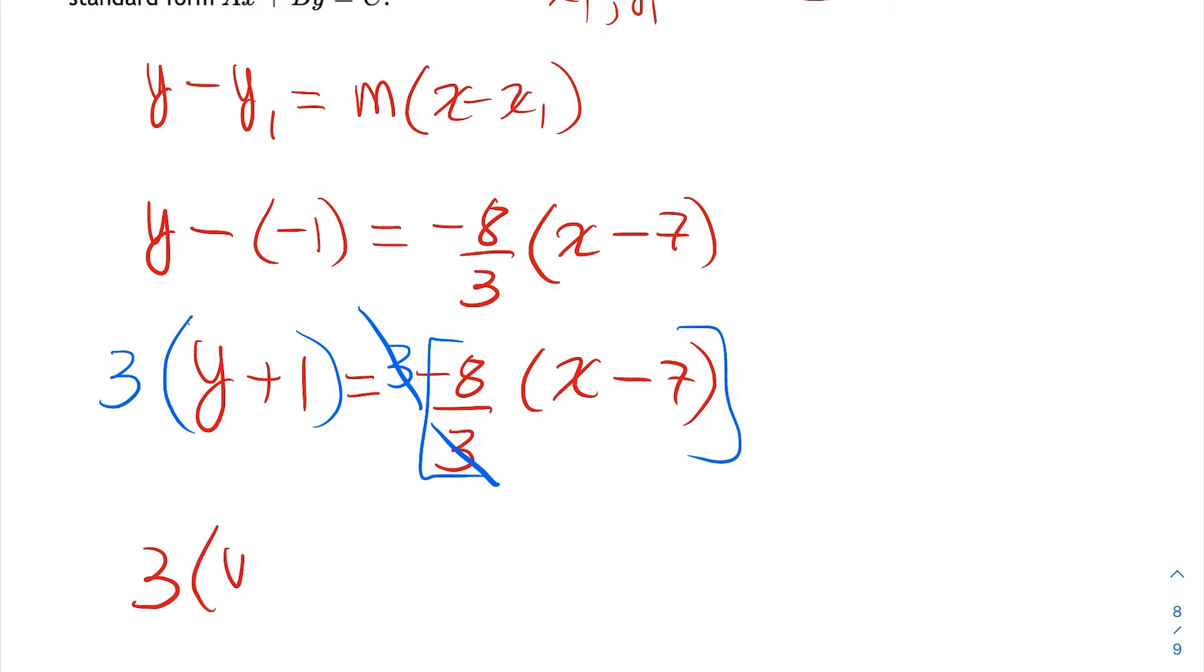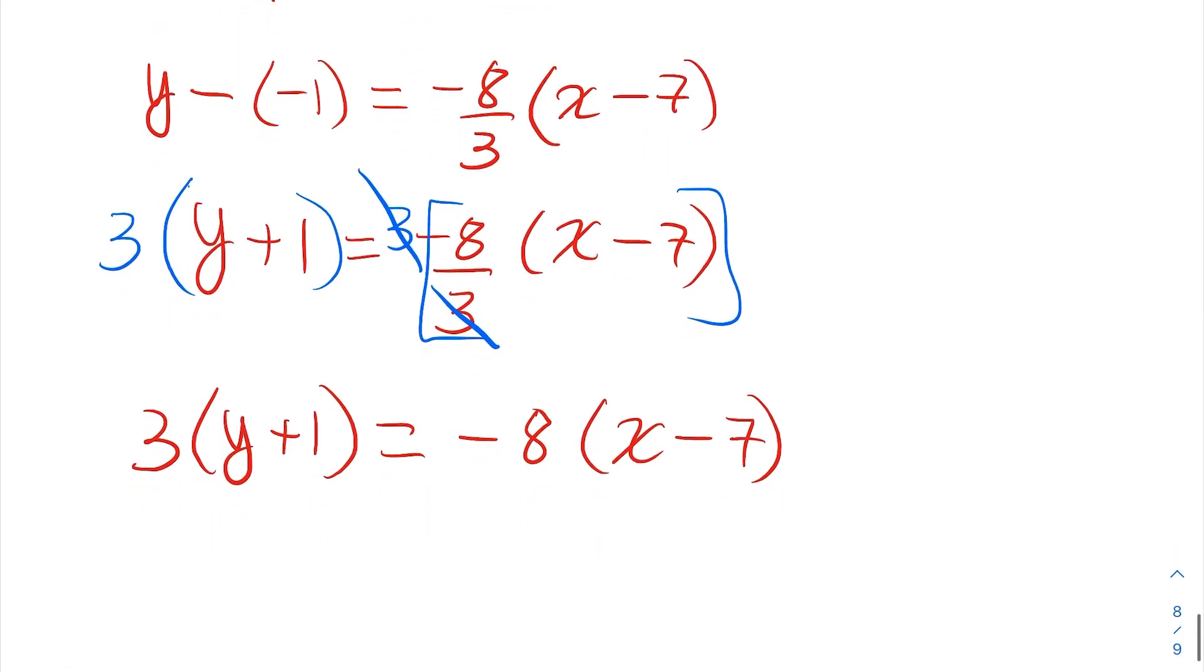So the next step looks like this. On the left, you'll have 3 times y plus 1, but on the right, after the 3s cancel, you'll have -8 times x minus 7. And from here, you can proceed to put it in the correct form.